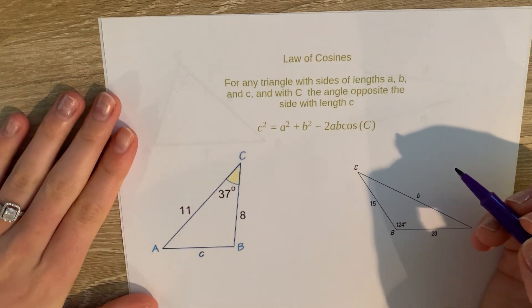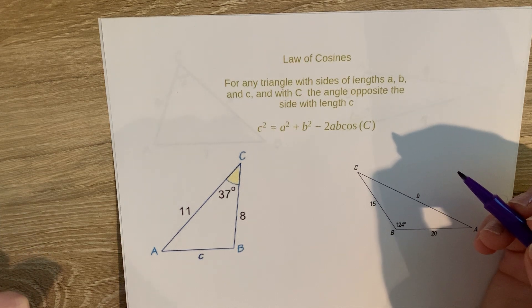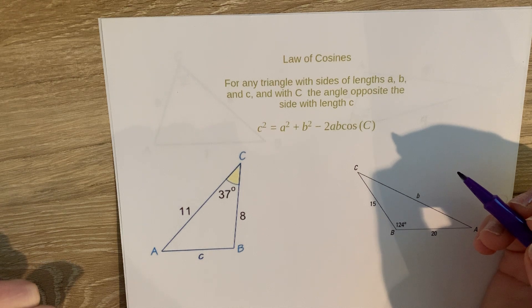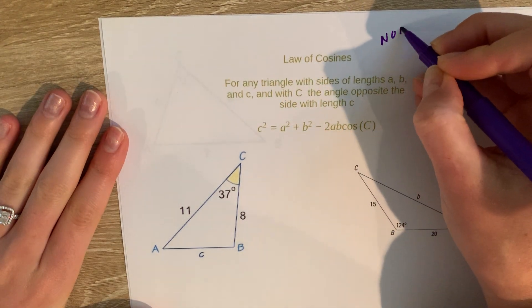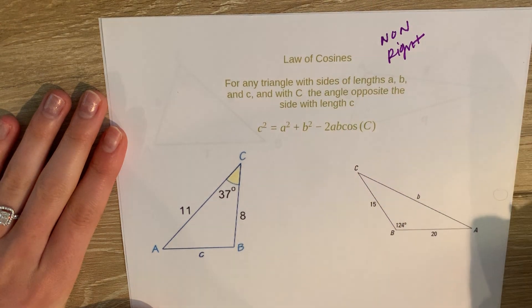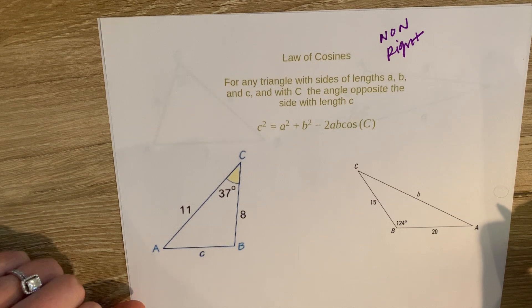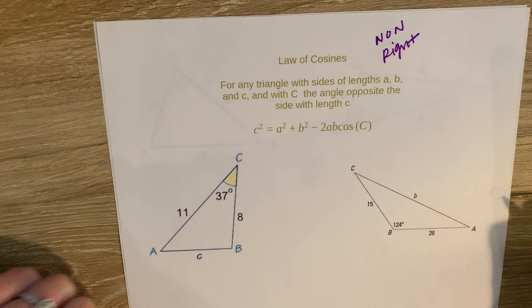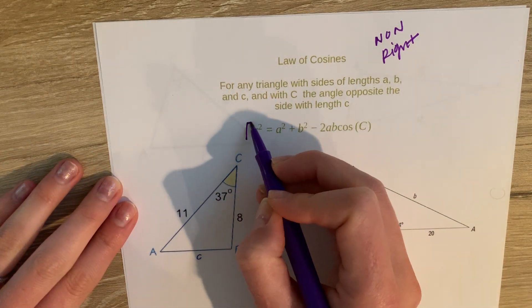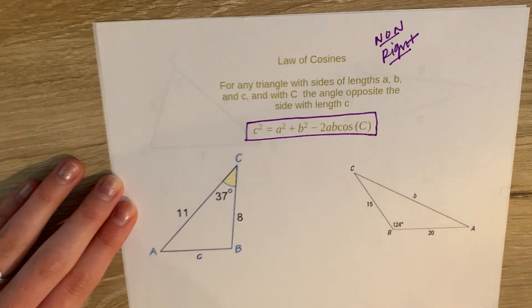All right, the law of cosines is very similar in aspect to the law of sines. The law of cosines can only be used with non-right triangles, so non-right, where that was very similar to our law of sines.